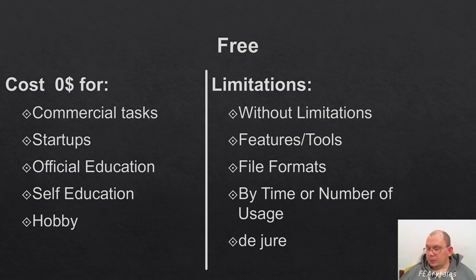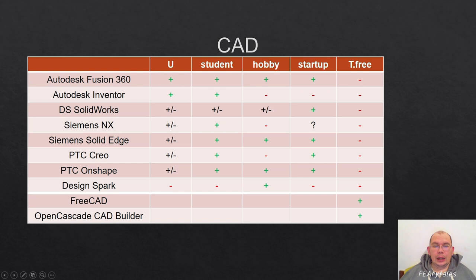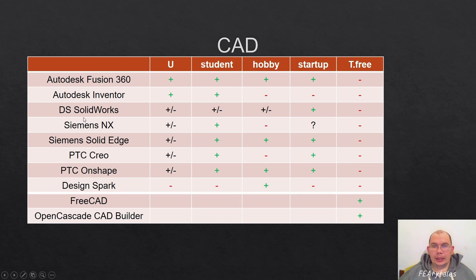To summarize, we've talked about limitations and different types of usage. The license types are: university, student, hobby, startup, and totally free. This is a list of CAD software — some totally free, some commercial — presented in alphabetical order.